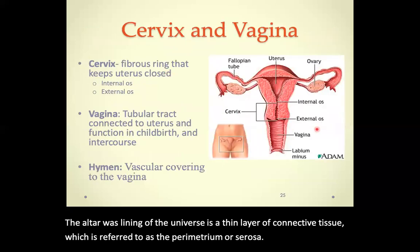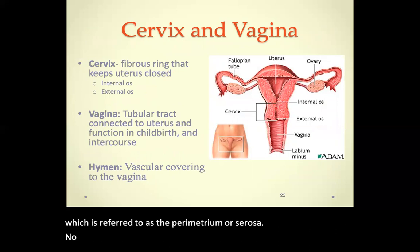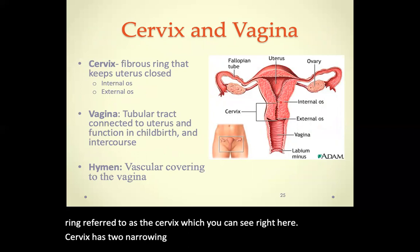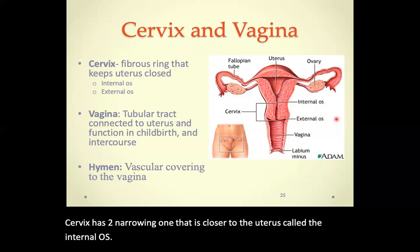The opening of the uterus is protected by a fibrous ring referred to as the cervix, which you can see here. The cervix has two narrowings: one closer to the uterus called the internal os, and one closest to the vagina called the external os.